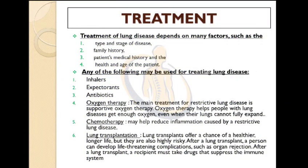Moving towards the treatment part. The treatment of lung disease depends on many factors such as the type and stage of disease, family history, patient's medical history, and the health and age of the patient. Treatments may include inhalers, expectorants, antibiotics, and oxygen therapy. Oxygen therapy is the main supportive treatment for restrictive lung diseases, helping patients get enough oxygen even when their lungs cannot fully expand. Chemotherapy may help reduce inflammation caused by a restrictive lung disease. Lung transplants offer a chance of a healthier, longer life, but they are also highly risky.